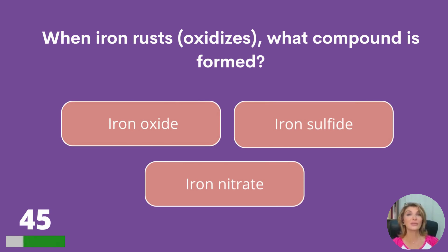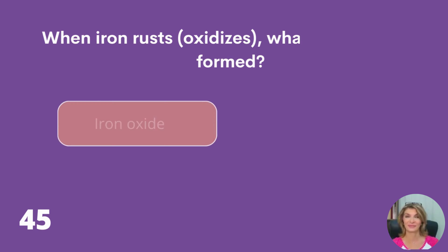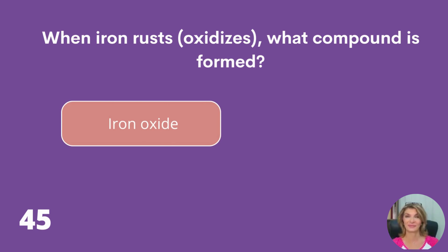When iron rusts, what compound is formed: iron oxide, iron sulfide, or iron nitrate? Iron oxide.